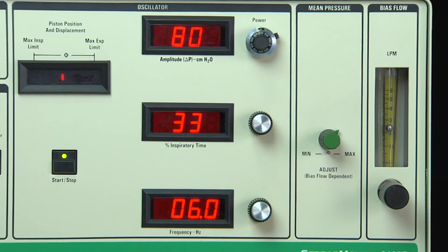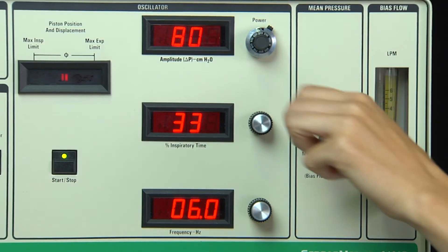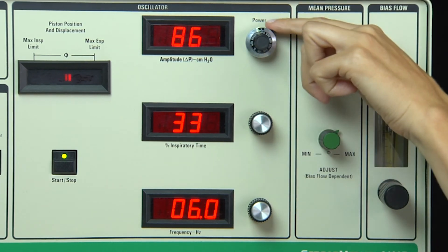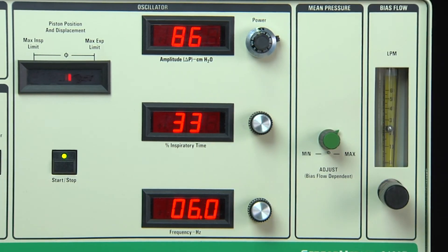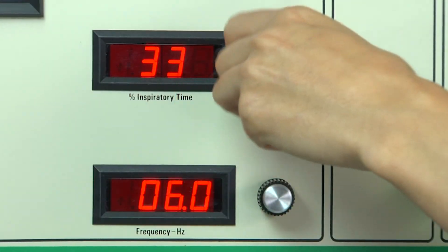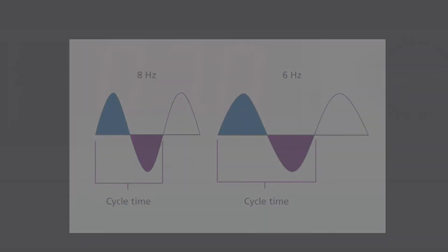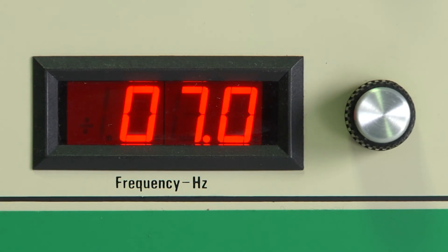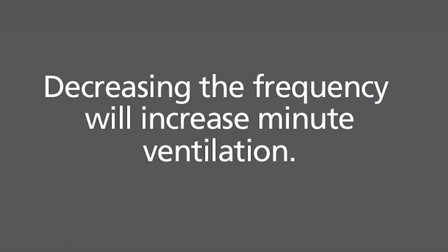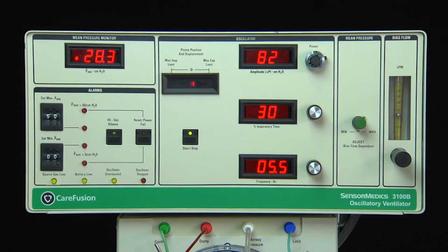Altering the voltage to the linear motor by manipulating the power control directly affects the amplitude. Since a given power setting represents a specific electromagnetic force acting on the piston, the duration of the force is controlled first by the frequency and second by the inspiratory time percent. As frequency decreases, total cycle time increases, thereby increasing the duration of time the force acts on the piston, resulting in an increase in tidal volume. This means that frequency behaves counterintuitively to conventional ventilation, and that decreasing the frequency will increase minute ventilation. Once an appropriate frequency is arrived at for a given patient, it usually does not change for the duration of therapy.